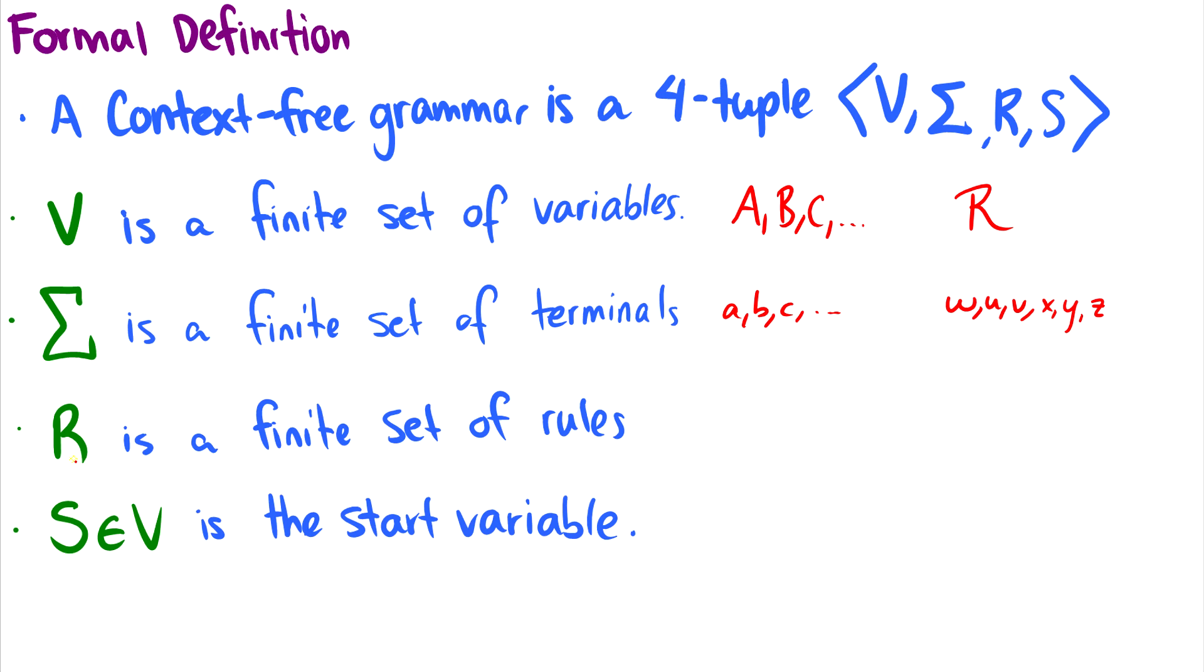R is a finite set of rules, so we can't have infinitely many rules. And we have a start variable, which in most cases I'll just call S.